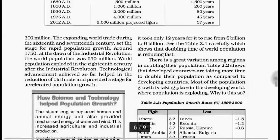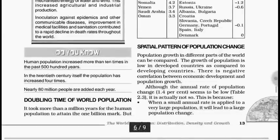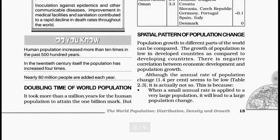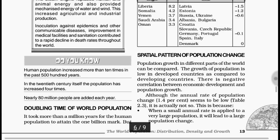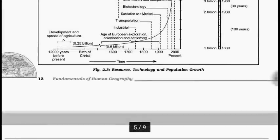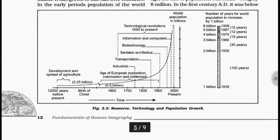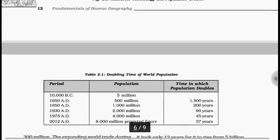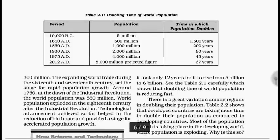The next topic is doubling time of population. Doubling time of population refers to the time taken by a population to double itself. As we saw in the graph, it has been increasing many folds and multiple times after 1800. This is due to improved health facilities, education facilities, and medical facilities.